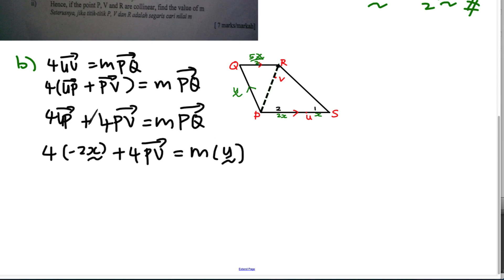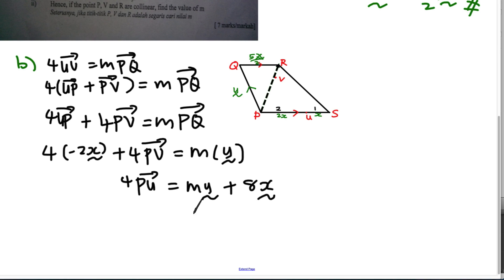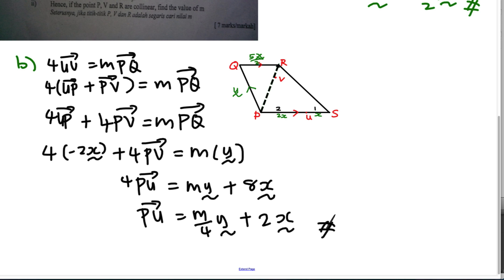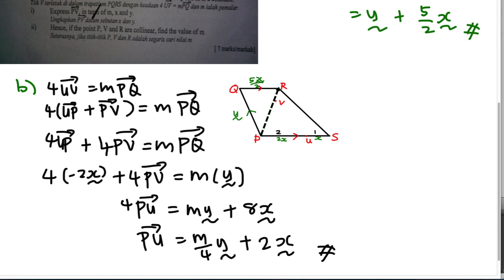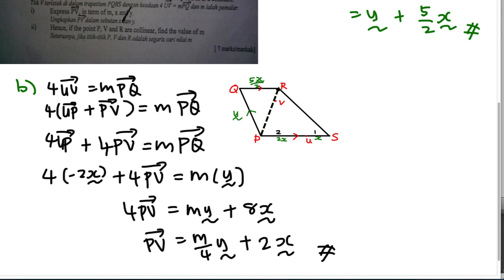Substituting: 4(−2x) + 4PV = m·y. Moving −8x to the other side gives +8x (since it's negative, moving it makes it positive), then dividing by 4: PV = m/4 · y + 2x. This gives PV in terms of m, x, and y.